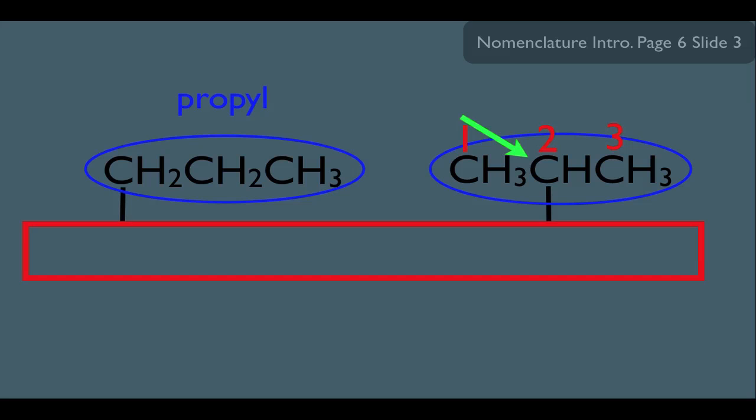Notice that is different from the substituent on the left. To the main chain, we're connecting to the first carbon within the substituent. In organic chemistry, we have to label these two things as different substituents. So the substituent on the left is propyl, and the one on the right is termed isopropyl.